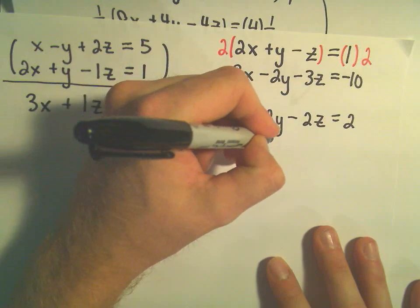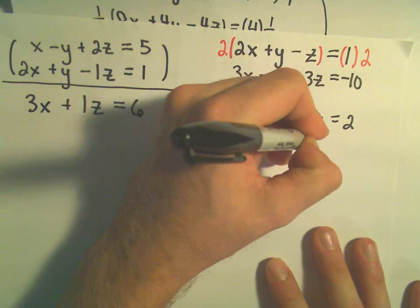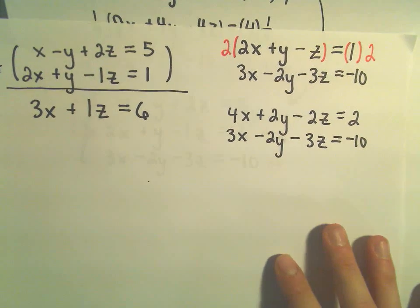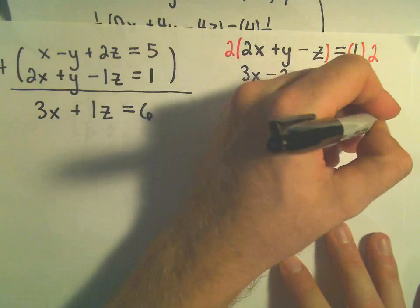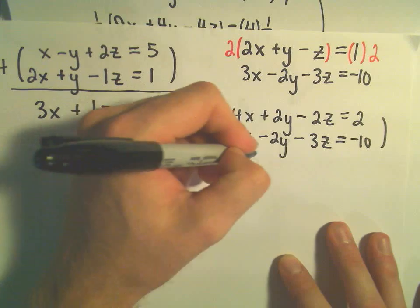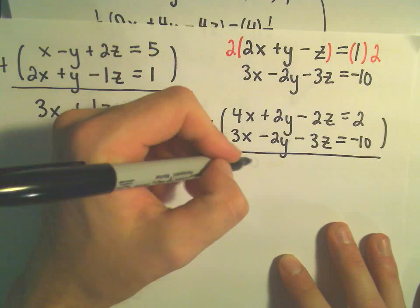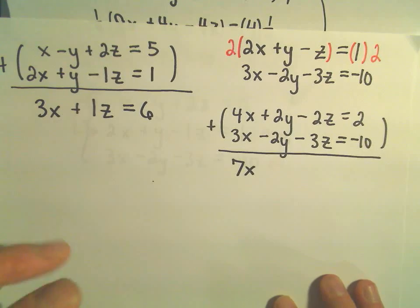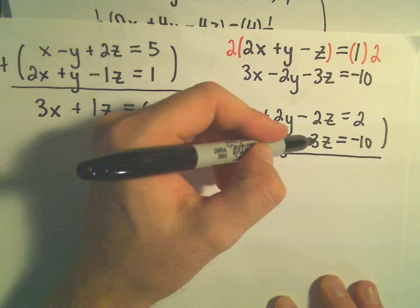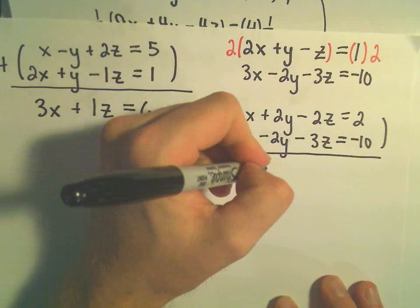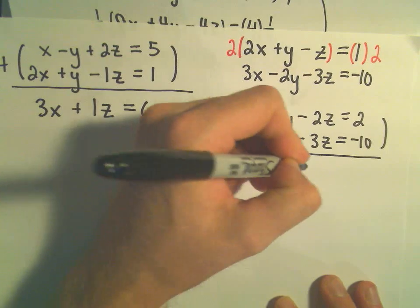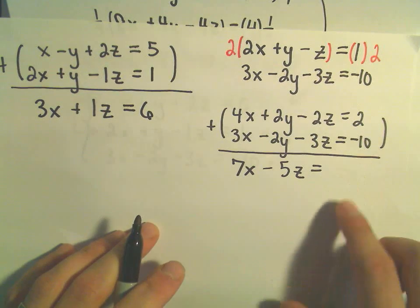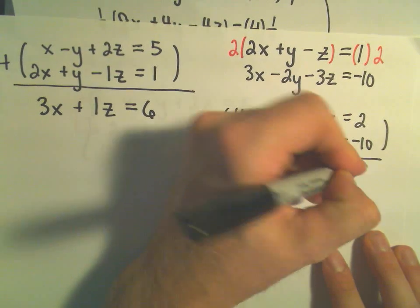3x minus 2y minus 3z equals negative 10. And now I'm going to do the same thing as before. I'm just going to add those together. 4x plus 3x will give me 7x. The y's are going to cancel out. Negative 2z plus negative 3z will be negative 5z. And then we have a positive 2 plus a negative 10. That would give us negative 8.